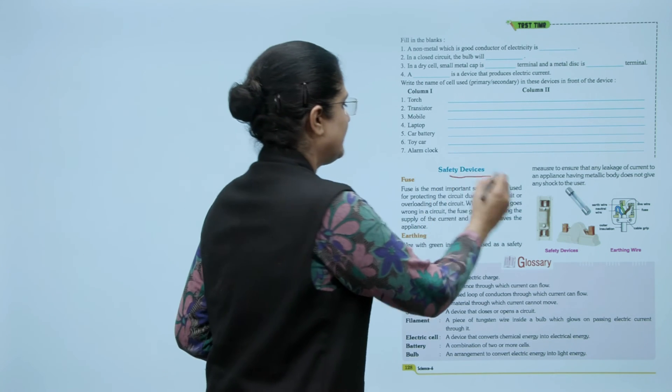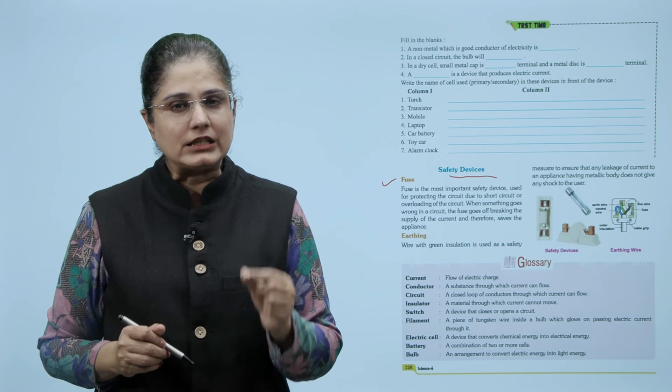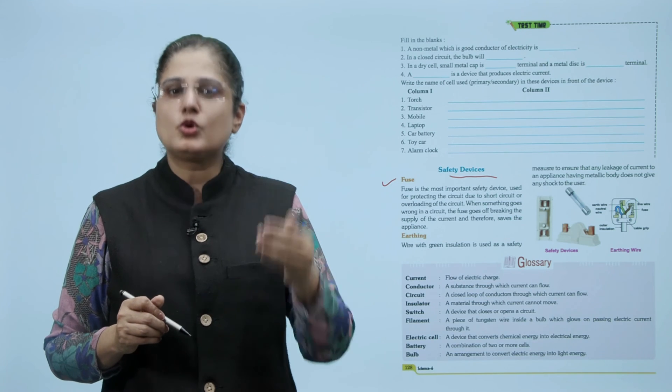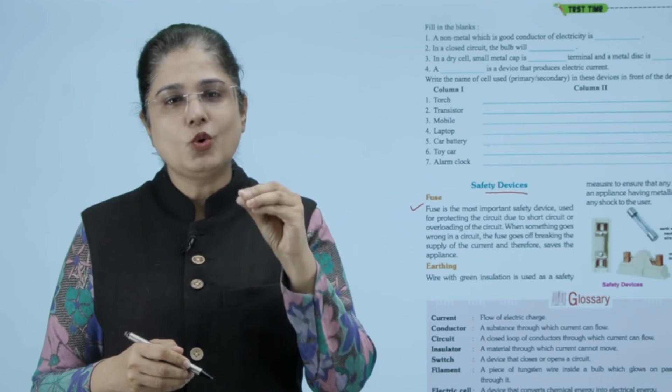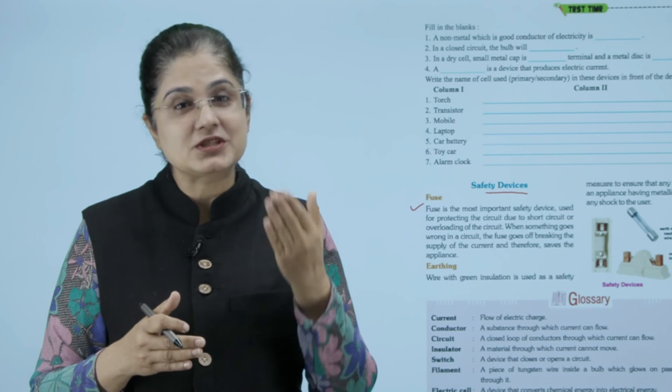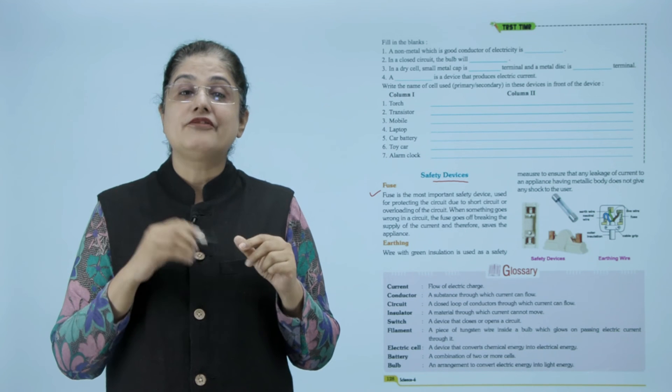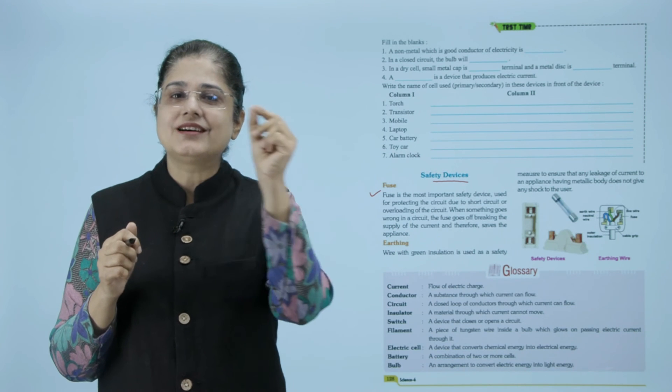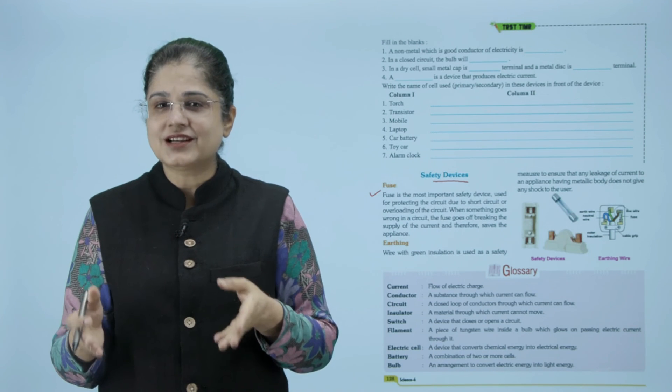So this brings us to the safety devices and we begin with the fuse. Fuse is the most important safety device used for protecting the circuit due to short circuit or overloading of the circuit. When something goes wrong in a circuit, the fuse goes off, breaking the supply of the current and therefore saves the appliance. Short circuit या overloading की वजह से, आपके जो electrical appliances हैं, वो खराब ना हो जाएं, इसके लिए हमें fuse लगाने की ज़रूरत पड़ती है। आपके जो क्या होता है कि मान लीजे यहाँ overloading हो रही है या फिर electric current जो है उसके वजह से short circuit हो रहा है किसी भी reason से। तो वो electric current को रोक देता है क्योंकि fuse टूट जाता है। इससे आपके appliances तक current नहीं पहुँचता और वो बचे रहते हैं।